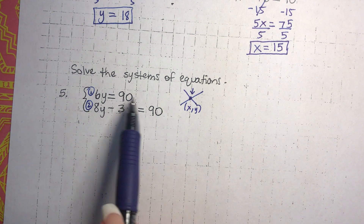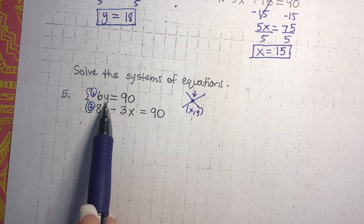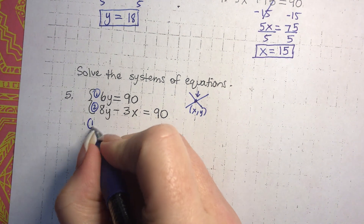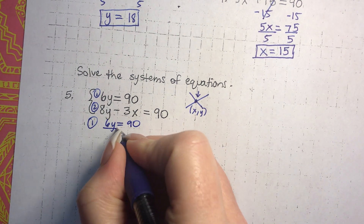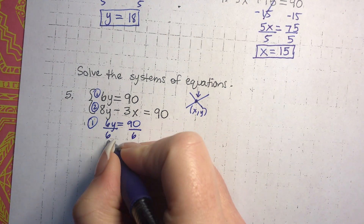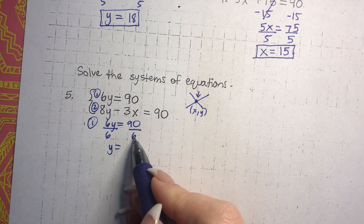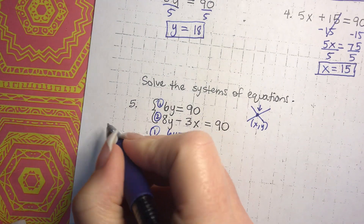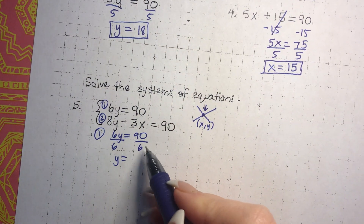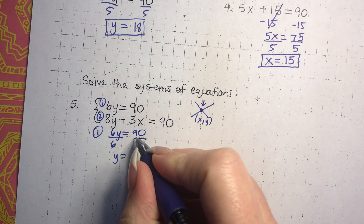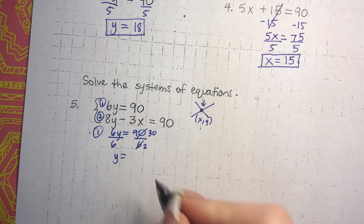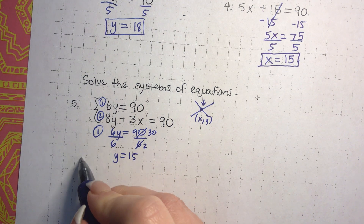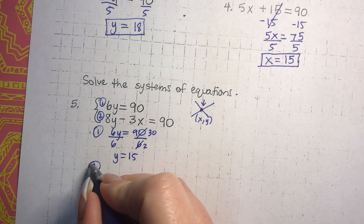I see with equation 1 that if I solve it for y, which shouldn't be too complicated, then I can just substitute it into equation 2. So I'm going to rewrite equation 1 and solve it for y. 6 divided by 6 is 1, and 90 divided by 6 — well, 3 goes into 6 two times and 3 goes into 90 thirty times, so that's 30 divided by 2, which is 15. So y equals 15.